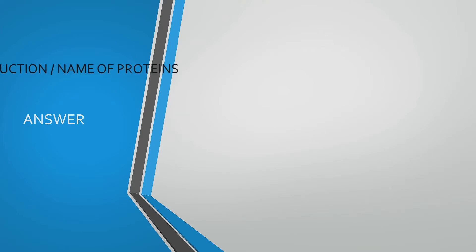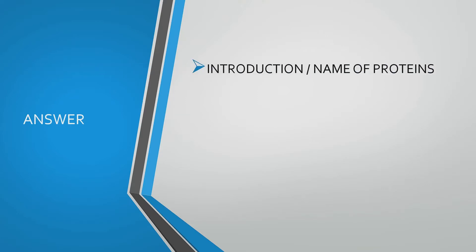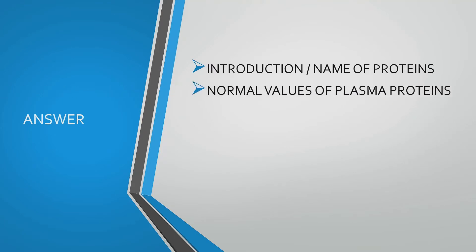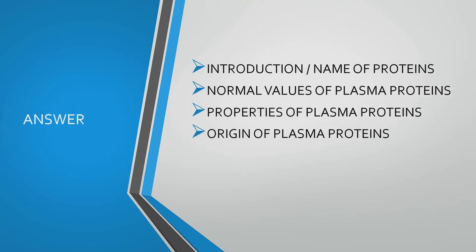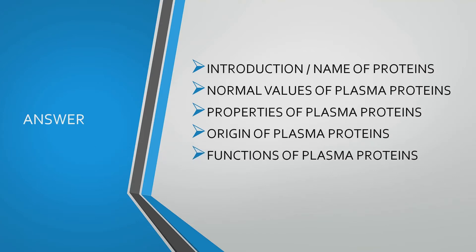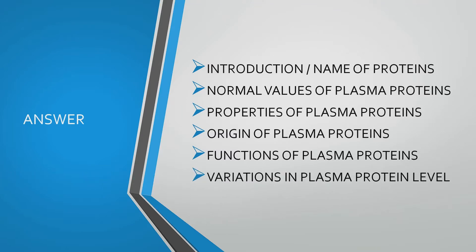The answer should be written in the following headings: number 1, name of the plasma proteins; number 2, normal values; number 3, properties; number 4, origin of plasma proteins; number 5, functions; and number 6, variations in plasma protein level.